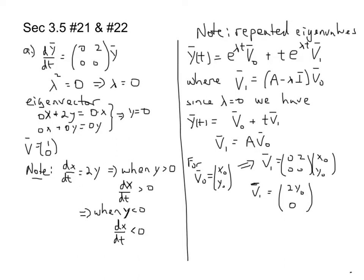We are given an unusual matrix. Three entries are zero. One non-zero entry. Its eigenvalues are repeated and equal to zero.